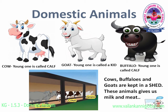Cow, goat and buffalo are domestic animals. They all are kept in a shed. These animals give us milk and meat. One of the cow is called calf. One of the goat is called a kid. One of the buffalo is called calf.